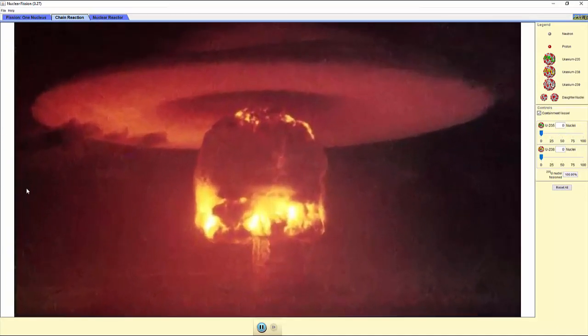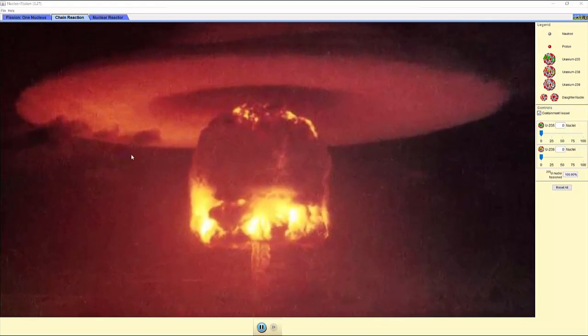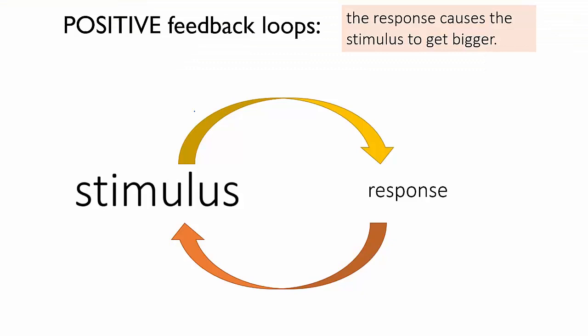So a positive feedback loop amplifies a stimulus, it makes it get bigger. That can be useful if you need to turn a small signal into a big one, but if it goes on too long, it might cause a situation to get out of control.